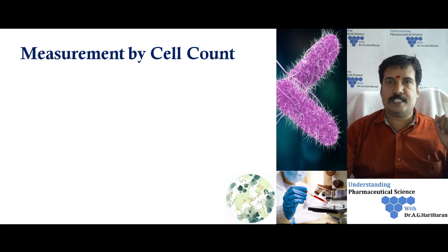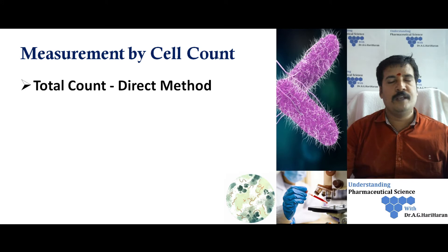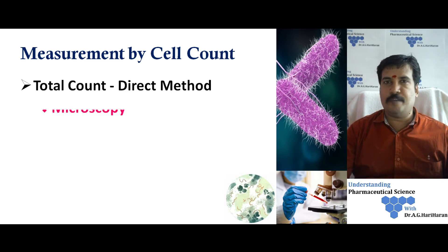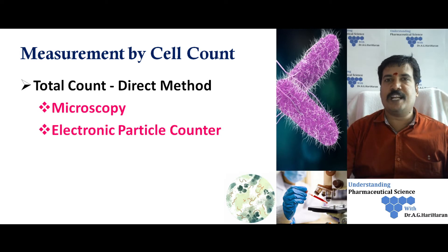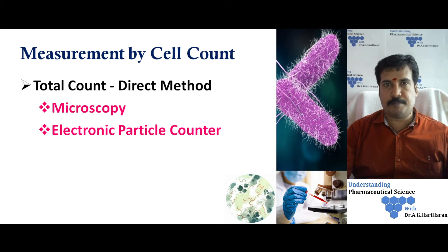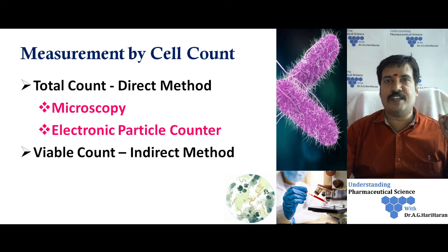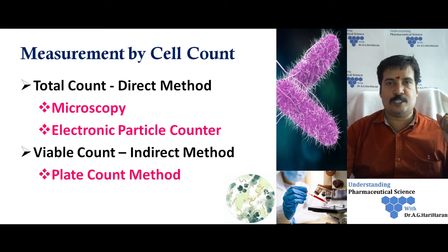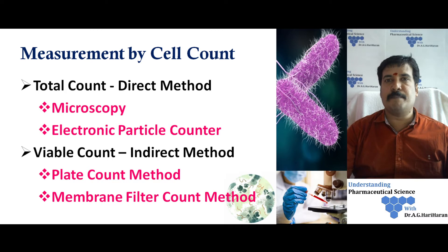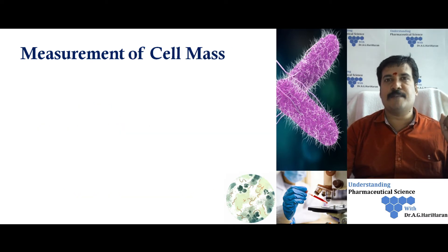Cell count is generally done by two methods. First, a direct counting method called total count, which counts both living and non-living microbial cells. This can be done by microscopy or with an electronic particle counter such as a Coulter counter or flow cytometer. The second method, which is very important, is an indirect method — the viable count technique — which we will elaborate on. Two techniques are employed: the plate count method and the membrane filter count method.